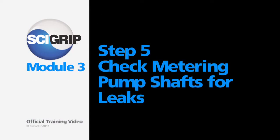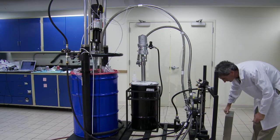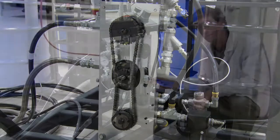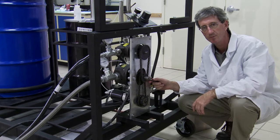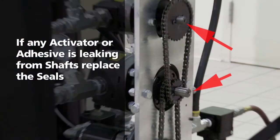Step five, inspect the metering pump shafts for leaks. Remove the guard. With the airline disconnected, check the adhesive metering pump and the activator metering pump for leaks. If there's any activator or adhesive leaking out of the shaft, replace the seals.